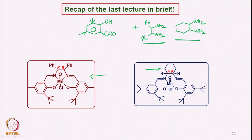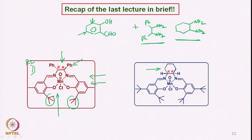This gives the manganese oxo complex. We looked at how the epoxidation proceeds — the particular phenyl group allows blocking of the olefin approaching from this side, and also blocks approach from this side and from the tertiary butyl group side. Eventually, what is allowed is an RL group on this side and an RSS group on the other side, with the large group on one side and the small group toward the lower side, allowing epoxidation to take place.